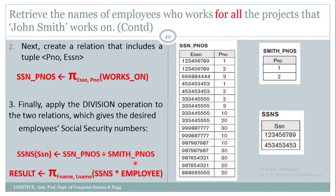The denominator is the project numbers of John Smith, and the numerator consists of ESSN and project number of all employees. The resultant relation gives the social security numbers of employees who work for all the projects that John Smith works on. Now, since I want their names, I perform a natural join with the employee relation and retrieve the first name and last name using the pi operation. The final result gives the first name and last name of all employees who work for those projects where John Smith works.